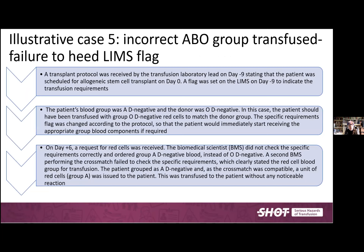Fifth case: a transplant protocol was received by the laboratory on day minus nine, nine days before the transplant, and a flag was set on the LIMS to indicate transfusion requirements. The patient's blood group was A, D negative, but the donor was O, D negative, so the patient should have had O, D negative red cells to match the donor group. The specific requirements flag was changed according to the protocol. On day plus six, a request for red cells was received, but the BMS did not check the specific requirements correctly and ordered the patient's original group A instead of O. The second BMS performing the crossmatch also failed to check the specific requirements, and so this was missed in the laboratory. The patient received a transfusion without any noticeable reaction.